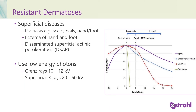We can also use kilovoltage x-rays to treat superficial skin conditions such as psoriasis, eczema, and DSAP. If these are very superficial, we would use Grenz rays at 10 to 12 kV. If they're thicker, particularly on the hands, feet, nails, and scalp, we might use higher energy x-rays at 20 to 50 kV.